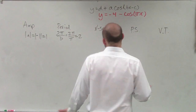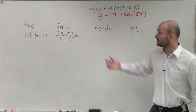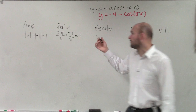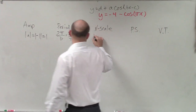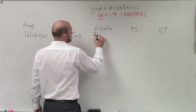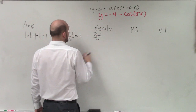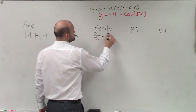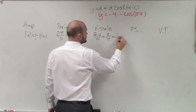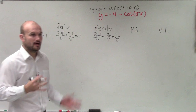Then we do our x scale. Our x scale is our period divided by 4. So just take your period divided by 4: that is 2 divided by 4, which equals one half.